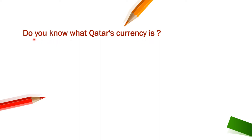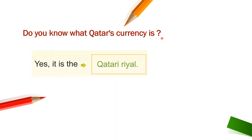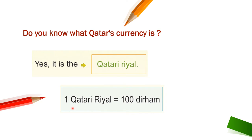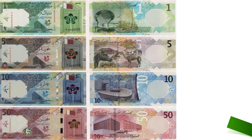Do you know what Qatar's currency is? Yes, it is the Qatari riyal. One Qatari riyal is equal to one hundred dirham. Here are some of the new Qatari banknotes that are issued by Qatar Central Bank.